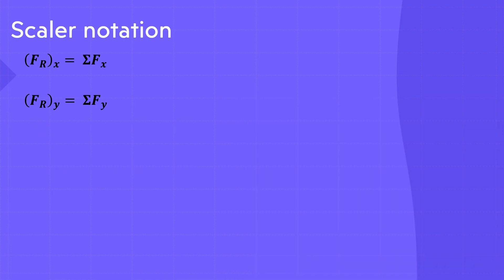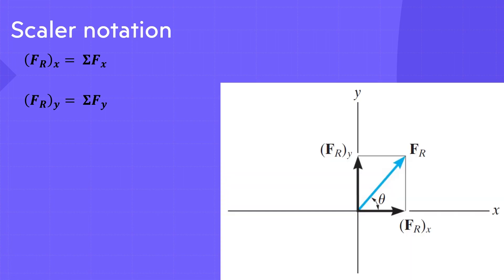Generally, we can obtain the components of the resultant force of any number of coplanar forces by the algebraic sum of the x and y components of all the forces. Once these components are determined, they may be sketched along the x and y axes with their proper sense of direction, and the resultant force can be determined from vector addition, as shown in this figure.